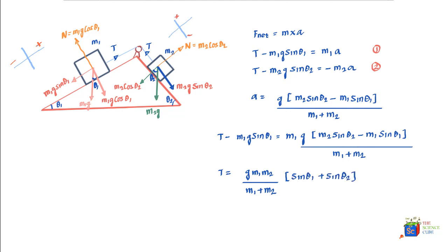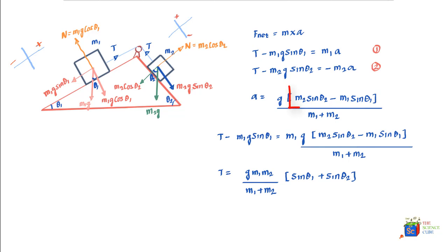A couple of things to note: M2 will slide down only if M2g sine theta2 is greater than M1g sine theta1, since tension is an internal force and this net component must drive the motion. If M2g sine theta2 equals M1g sine theta1, both masses remain stationary. You can verify this in the acceleration equation — if M2 sine theta2 equals M1 sine theta1, acceleration A automatically becomes zero.